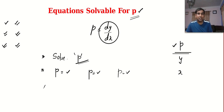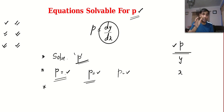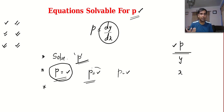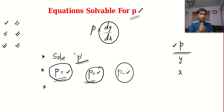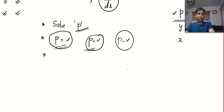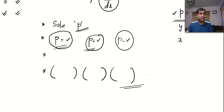Then what we do is we solve each equation independently. Sometimes these equations will be very easy — for example, variable separable. But sometimes it might be a little difficult — it might be a linear equation or homogeneous. That we will know only when we solve it. Anyway, the last part: write all the individual solutions as a product, and that will be the general solution.